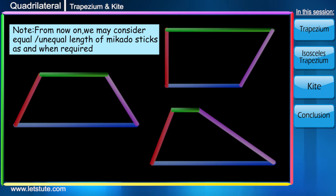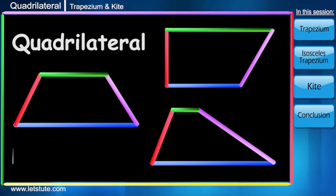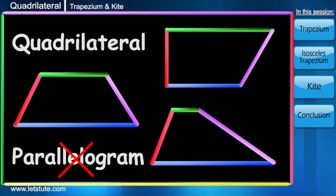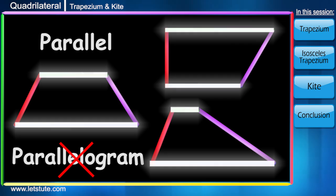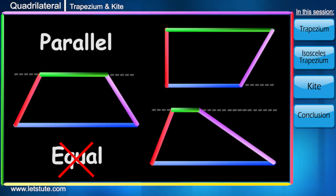Now on throwing these Mikado Sticks we see that they got arranged in some random shapes which look like a quadrilateral but not a parallelogram. The reason for them not being a parallelogram is that although one pair of opposite sides is parallel, they are not equal in length which restricts the other pair of opposite sides from being parallel.